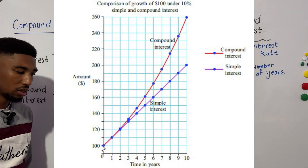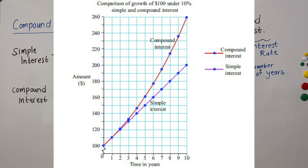Let's have a look at the graph between simple interest and compound interest. In this graph you can clearly see that the amount invested at the beginning would be 100 dollars under both simple and compound interest, with the purple graph indicating simple interest and the red graph indicating compound interest. As you can see, for the first year it's the same, and as the years go on, the compound interest is exponentially increasing.